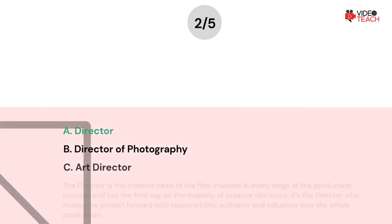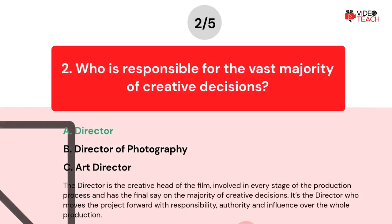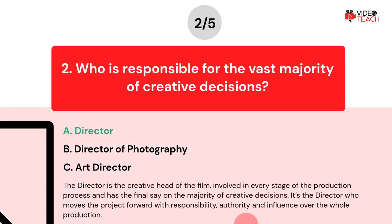The correct answer is Option A. The director is the creative head of the film, involved in every stage of the production process, and has the final say on the majority of creative decisions. It's the director who moves the project forward with responsibility, authority, and influence over the whole production.